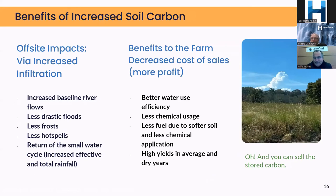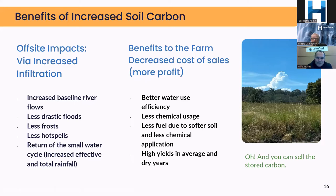The benefits of increased soil carbon just need to be briefly touched on. Some of these are dear to hydrogeologists' hearts, such as Richard and HydroTerra, because the off-site impacts of soil carbon through increased infiltration on the farm are significant. You increase baseline river flows, you have less drastic floods, less frosts across the district, less hot spells on farm. You have return of the small water cycle, with increased effective and total rain in the region. The benefits to the farm are also significant: decreased cost of sales, better water use efficiency, less chemical usage, less fuel due to softer soil, and higher yields in average and dry years.